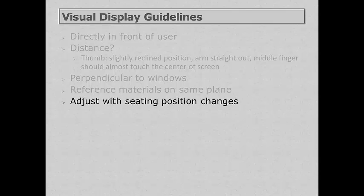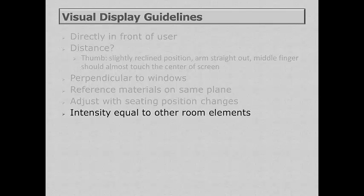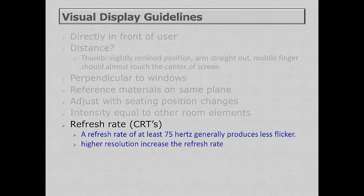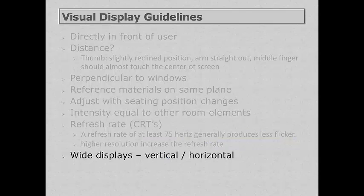As seating position changes, people don't always adjust the monitor — this is particularly helpful for people with limited vision to have the monitor easily adjustable. The computer monitor should have equal intensity compared to other elements in the room. Flicker isn't nearly as important with newer LCD and LED monitors, but a higher refresh rate reduces flicker. Since displays are not necessarily square, a user might benefit from a wider vertical orientation for long documents or wider horizontal orientation for spreadsheets or multiple windows.